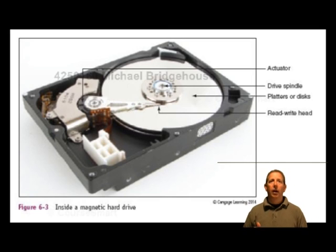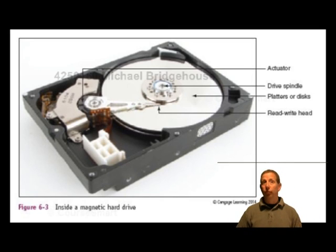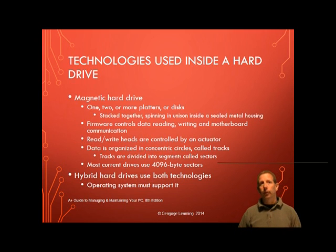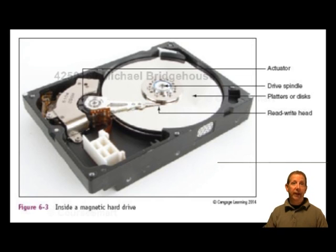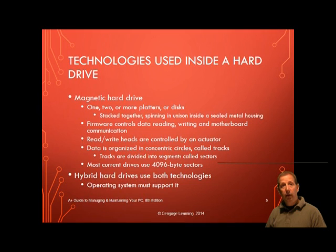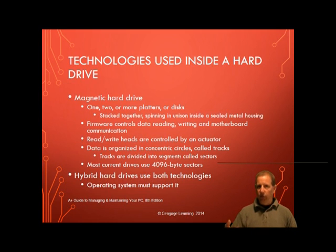The magnetic hard drive has one, two, or more platters or disks that stack together and spin in unison inside a sealed metal housing that contains firmware to control reading and writing of data to the drive and to communicate with the motherboard. The top and bottom of each disk have a read-write head that moves across the disk surface as the disks rotate on a spindle. All the read-write heads are controlled by an actuator which moves them across the disk surface in unison. The disk surfaces are covered with magnetic medium that can hold data as magnetic spots, and the spindle rotates at either 5400, 7200, 10,000, or 15,000 RPMs.